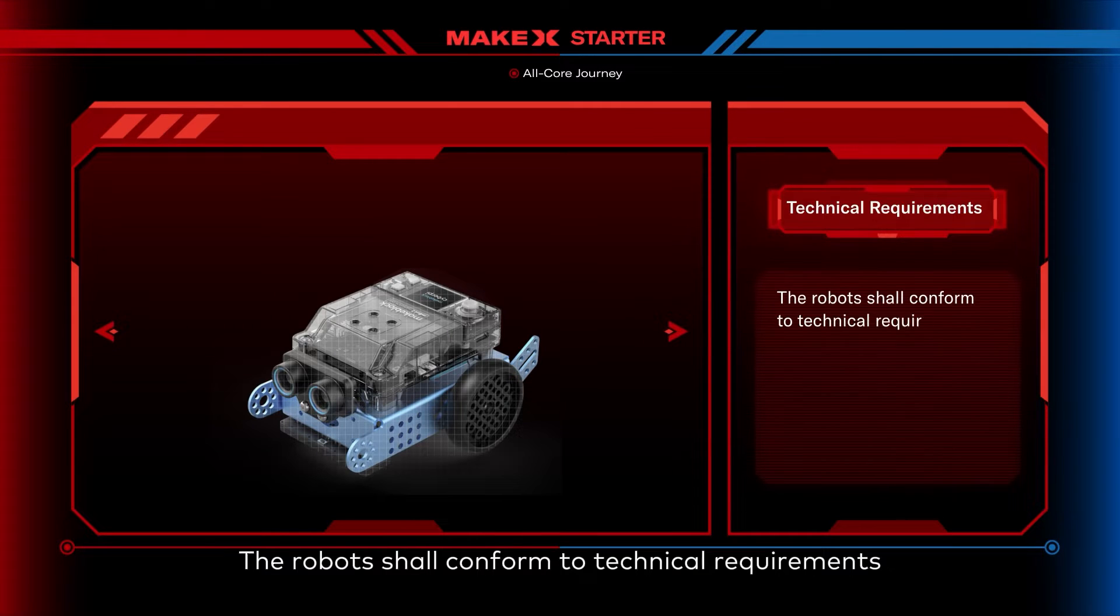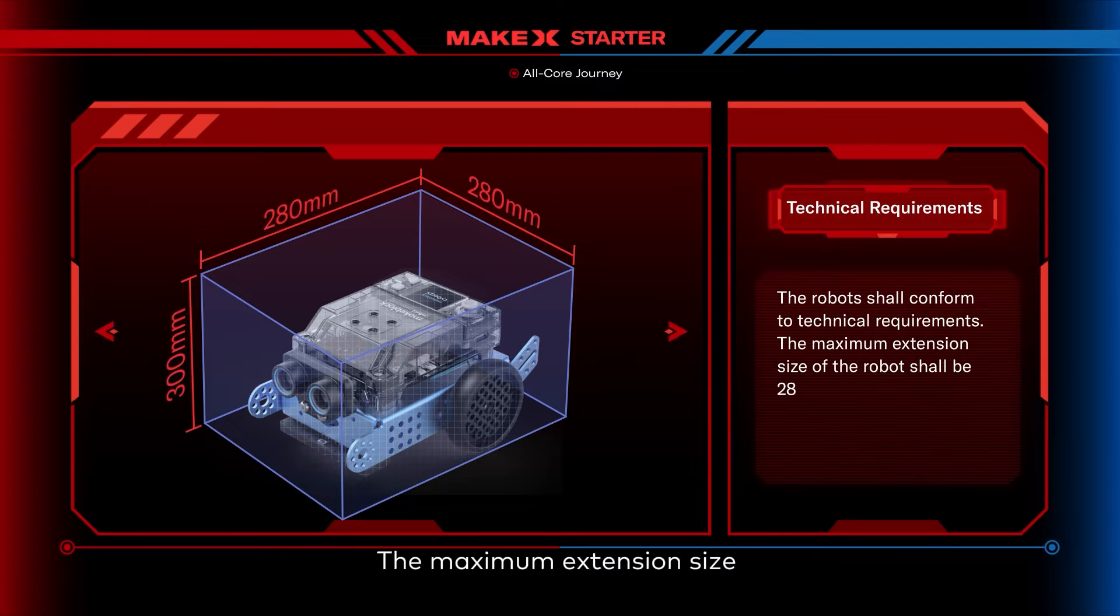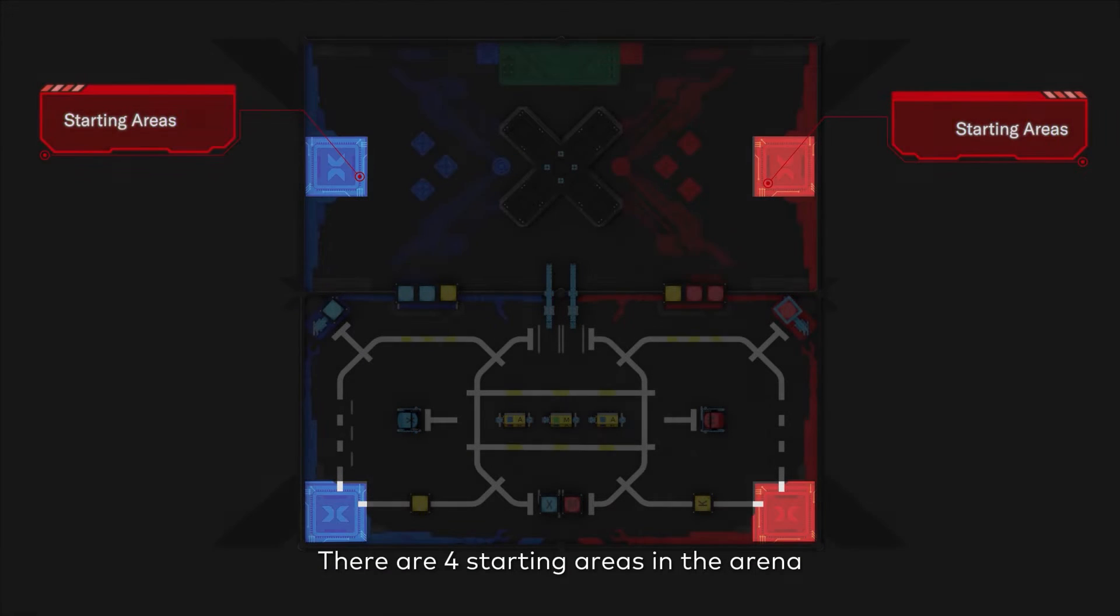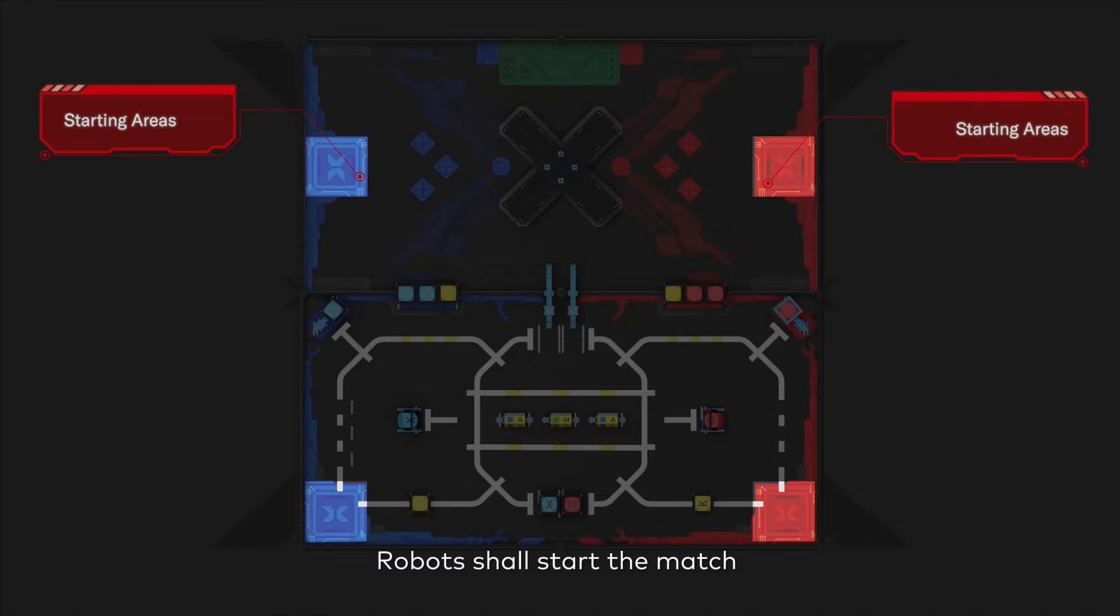The robots shall conform to technical requirements. The maximum extension size of the robot shall be 280mm by 280mm by 300mm. There are four starting areas in the arena. Robots shall start the match from their respective starting areas.